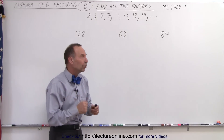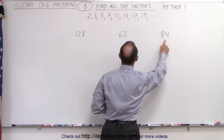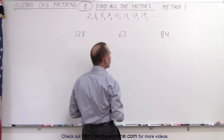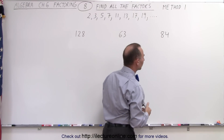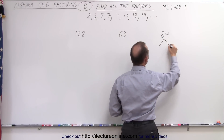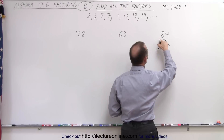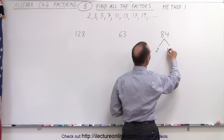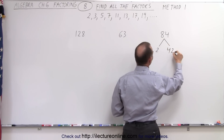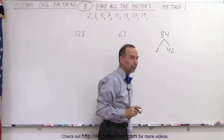Now 84 is an even number, which means that 84 is divisible by the number 2. When we divide 84 by the number 2, so here we write the 2 there, 2 goes into 8 four times, 2 goes into 4 two times, so 84 divided by 2 is 42.